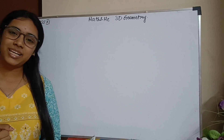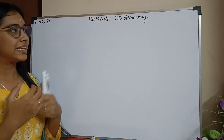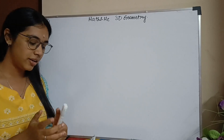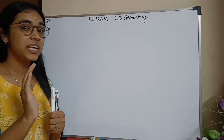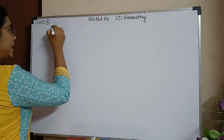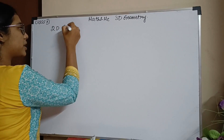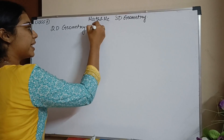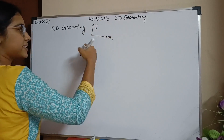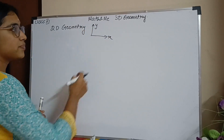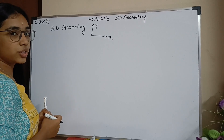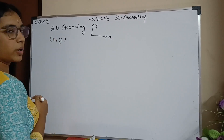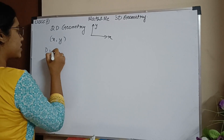Hi, hello and welcome back to Math and Me with me, Nikila Shankar. Today we are going to learn 3D geometry — this is the easiest chapter in your 11th standard. Until now you have learned 2D geometry, where you only have the x-y plane with an x-axis and a y-axis. In 3D geometry, in addition, you are going to have the z-axis.